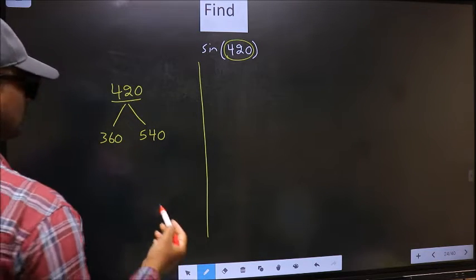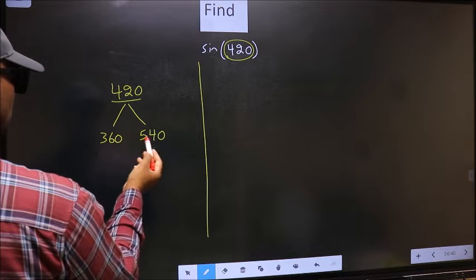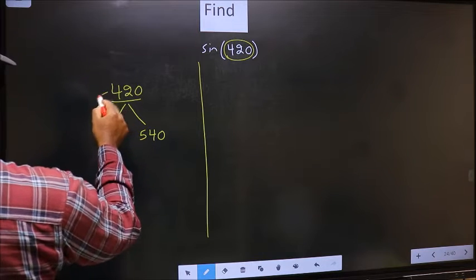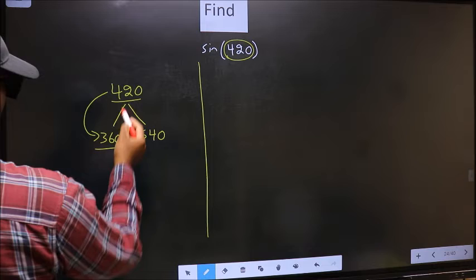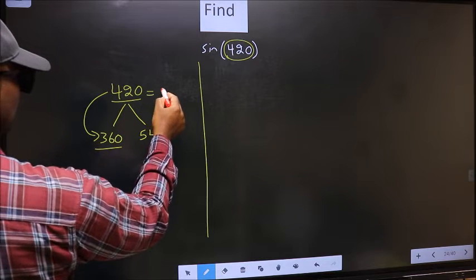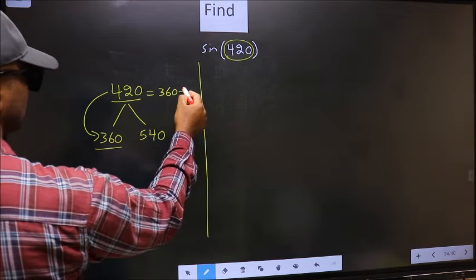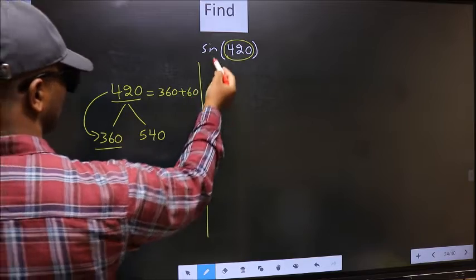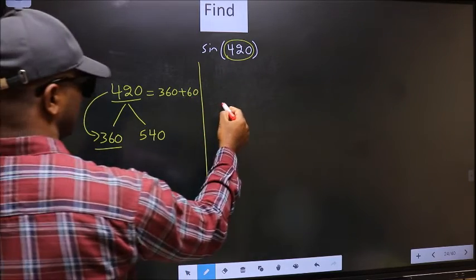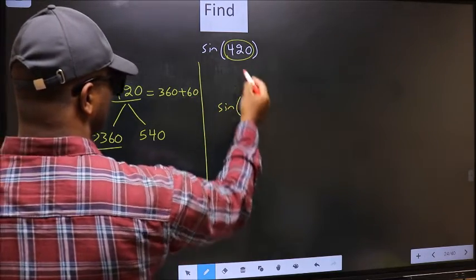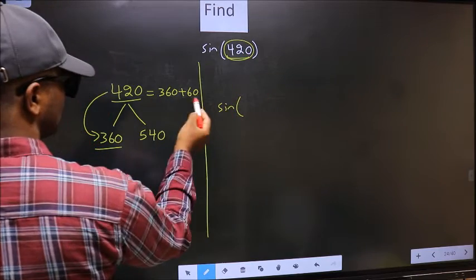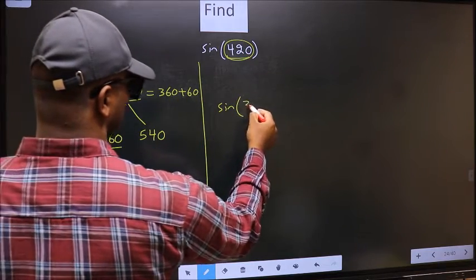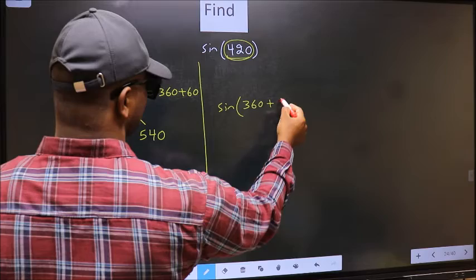Next. Now 420 is close to which number? This is close to 360. So 420 should be written as 360 plus 60. So this will become sin. In place of this, we should write 360 plus 60.